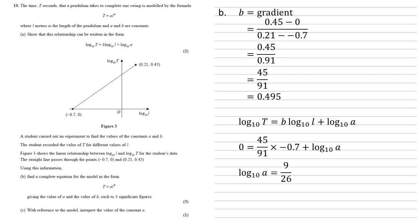Rearranging this we get that log base 10 a is equal to 9 over 26. Hence a is equal to 10 to the power of 9 over 26, which to three significant figures is 2.22. Therefore our equation is t equals 2.22 times l to the power of 0.495.